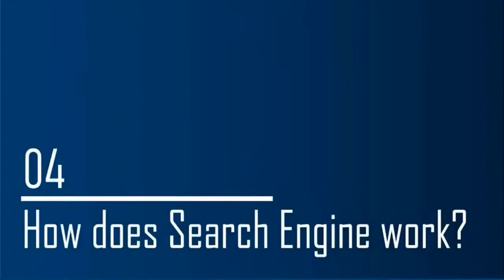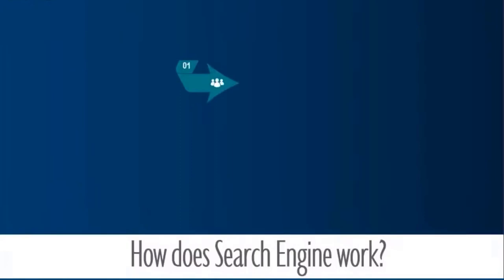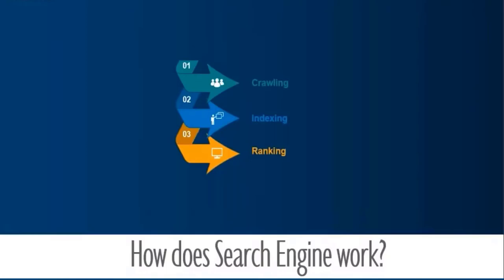How exactly do search engines work? Search engines exist to discover, understand, and organize the internet's content in order to offer the most relevant results to queries. To show up in search results, your content needs to be visible to the search engine. Search engines have three primary functions: crawling — scoring the internet for content, looking over the code and content for each URL they find; indexing — storing and organizing the content found during crawling; and ranking — providing the pieces of content that will best answer a searcher's query.